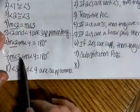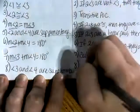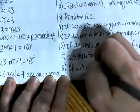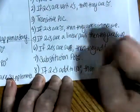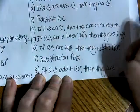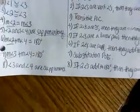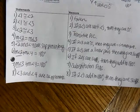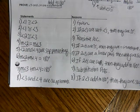Now I have three and four adding to equal 180, so therefore they are supplementary — if two angles add to 180 degrees, then they are supplementary. And I have now proven that angle three and angle four are supplementary. That is the end of this lesson. If you have any questions over anything I just talked about, please feel free to email me. Otherwise, I hope you have a wonderful day.